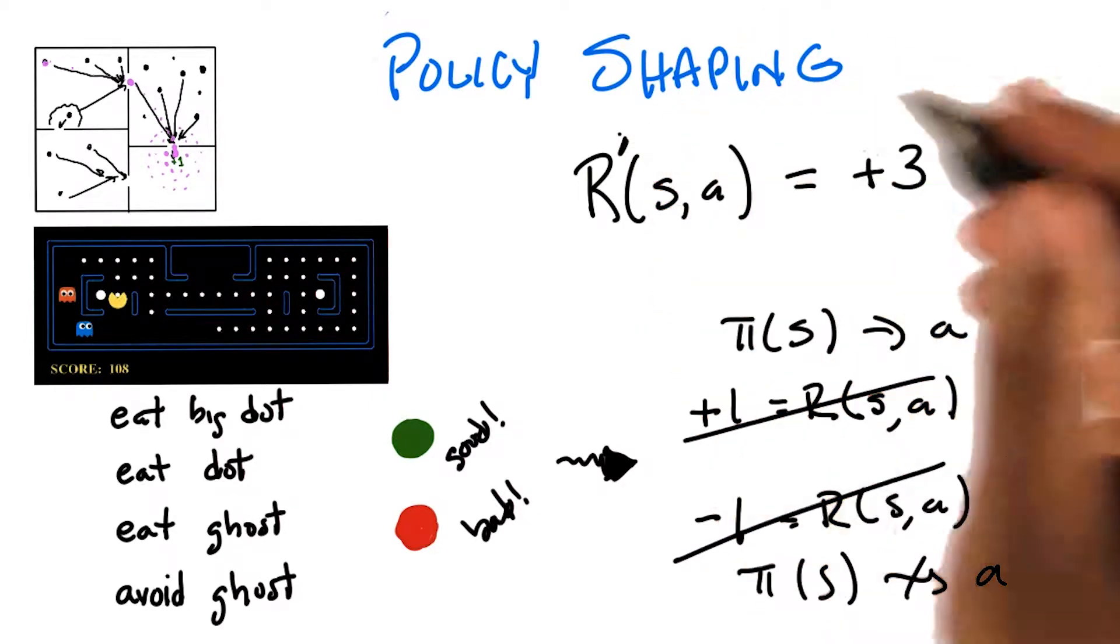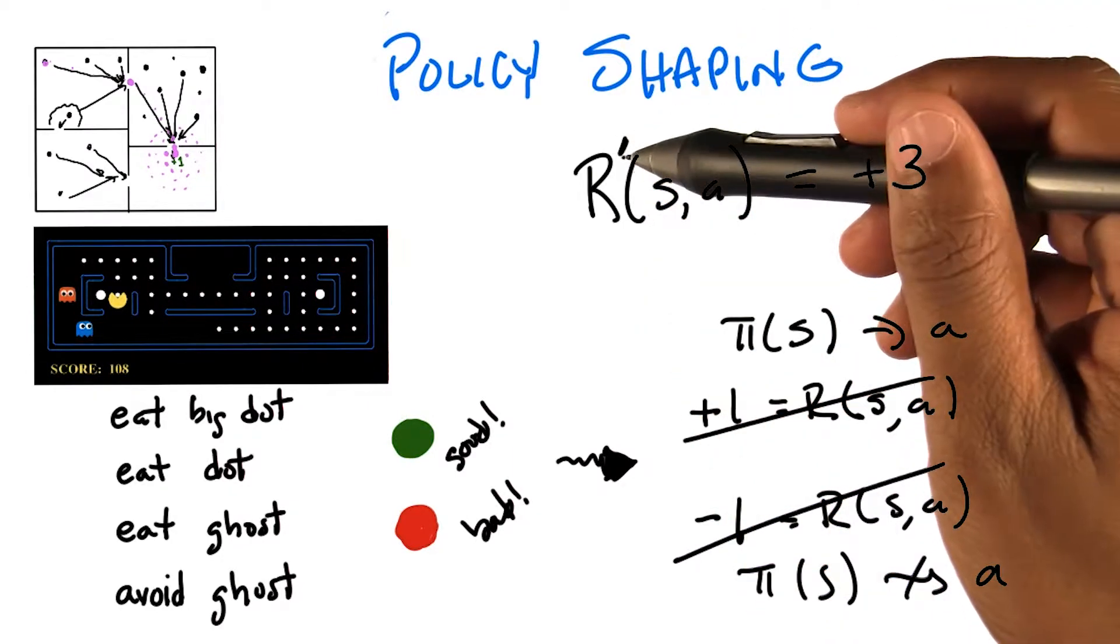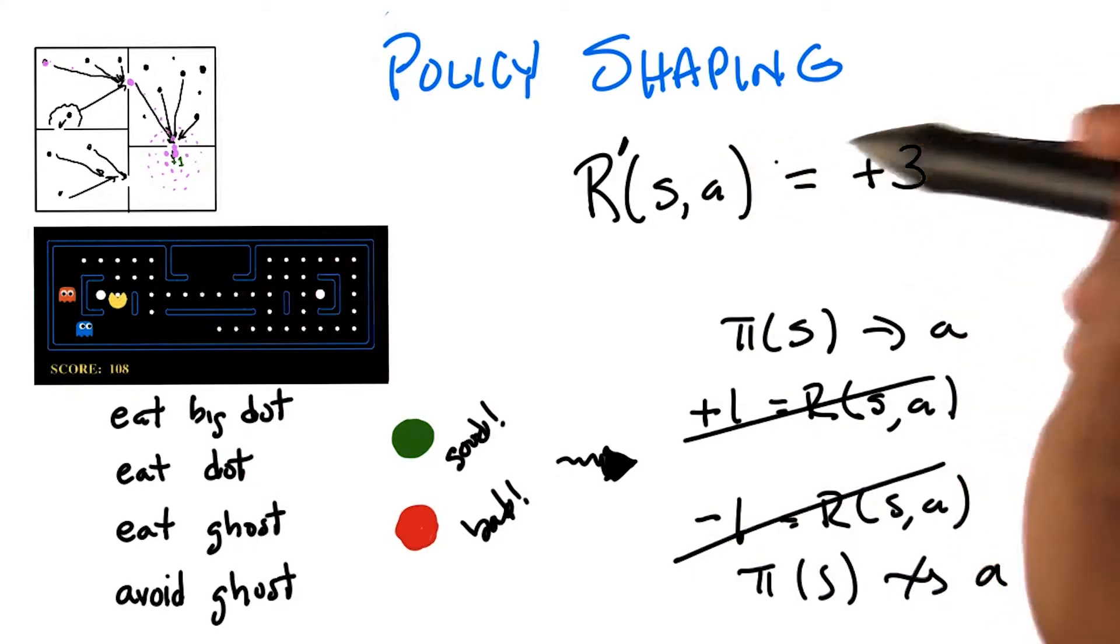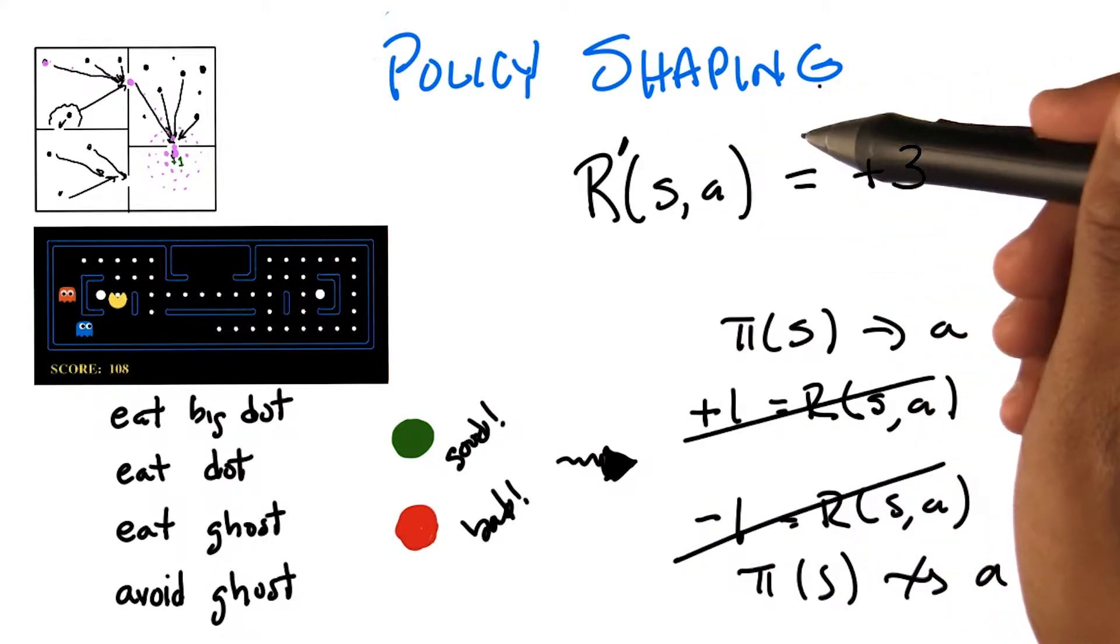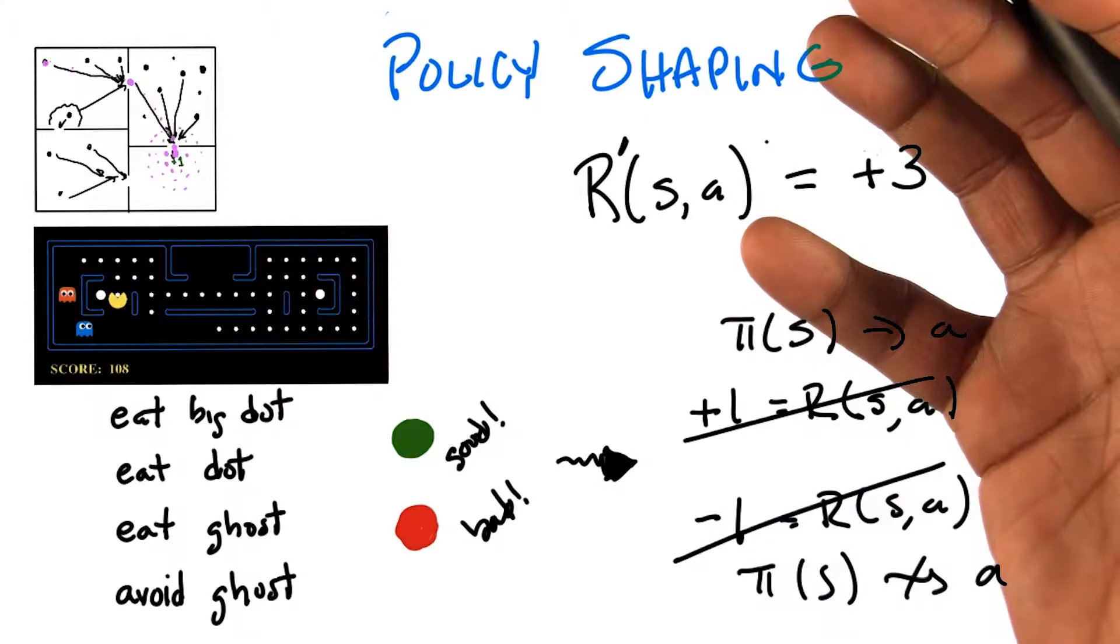So you've actually replaced the original reward function r with another reward function r prime, and said this is actually the reward function that you should be learning over.